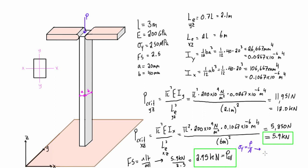That's 250 times 10^6 N/m² times the area. The area is 20 times 40, which is 800 mm², or in meters squared, 800 times 10^-6 m². If we multiply those together, we find the yield force.